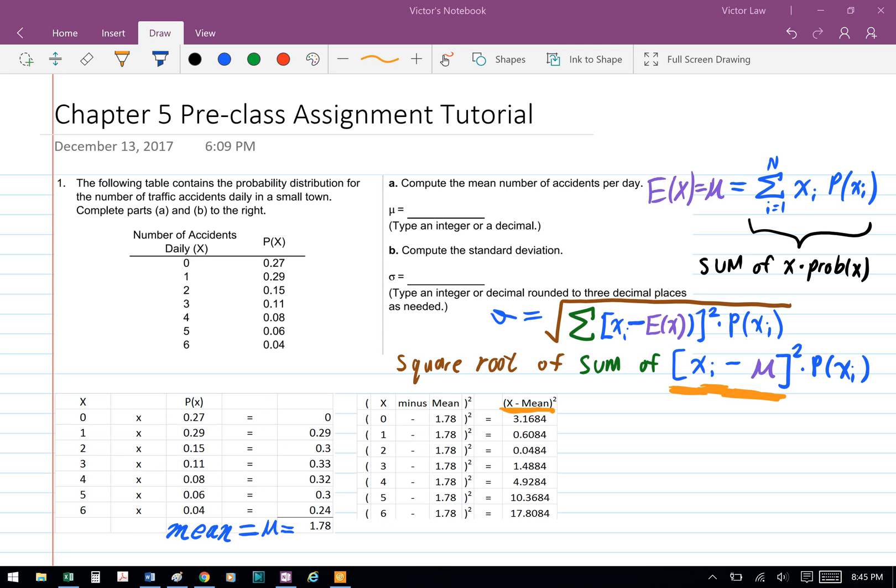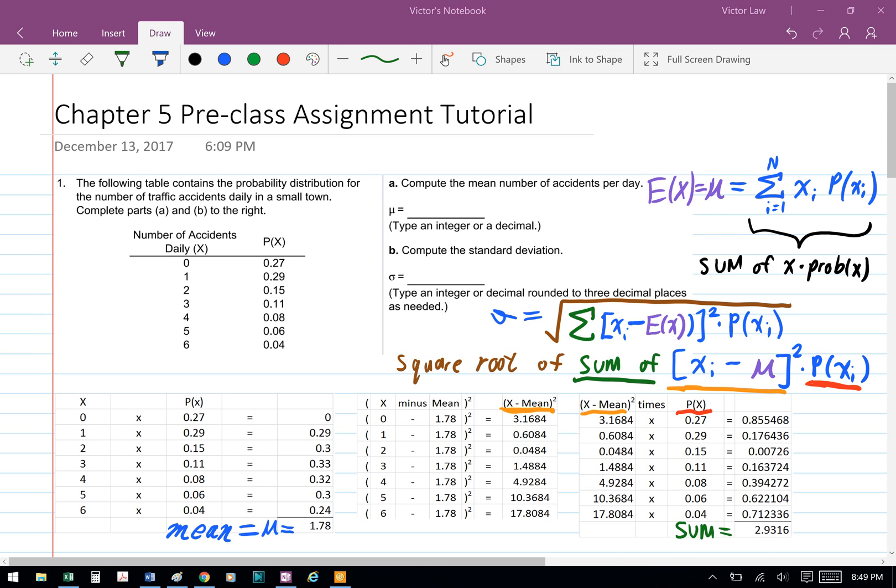First we're going to have each of the x variables minus the mean of 1.78, and then we're going to square the answer. Afterward we're going to take the square difference and then times it by each of the respective probability.